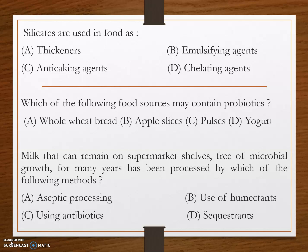Next question: milk that can remain on supermarket shelves free of microbial growth for many years has been processed by which method? The answer is option A — aseptic processing. Aseptic milk processing takes place before packaging with very short heating and cooling times, involving sterilization of food materials before packing into a sterile container in a sterile environment.